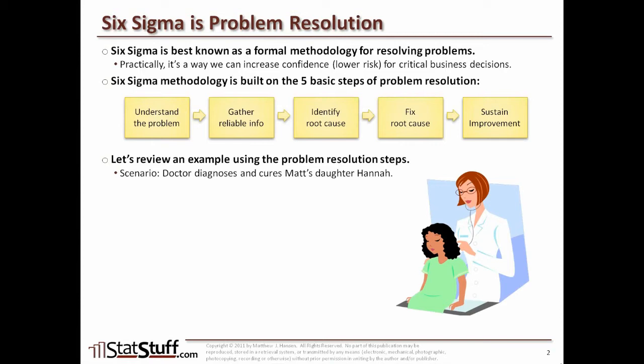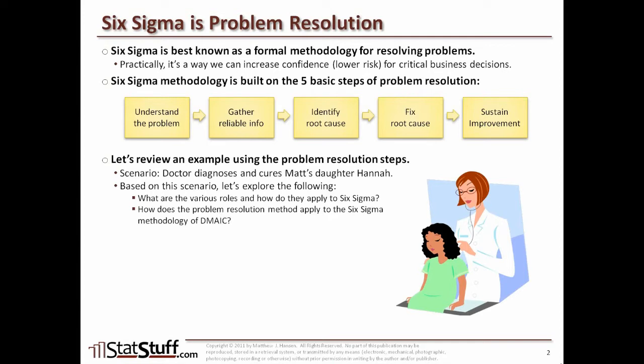As with antibiotics, you normally have to carry out the entire prescription — usually three, five, or ten days as prescribed. Using this scenario, I want to explore the various roles of the people involved and adapt them to Six Sigma, and show how we follow the normal problem resolution method — these five steps — and how the doctor's approach maps to the DMAIC methodology of Six Sigma.